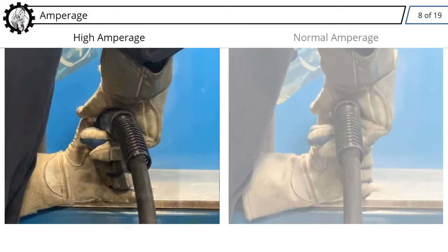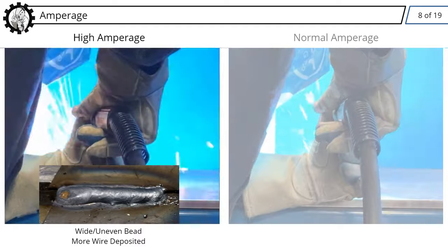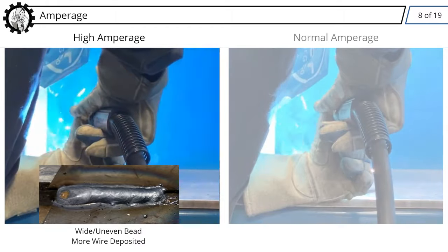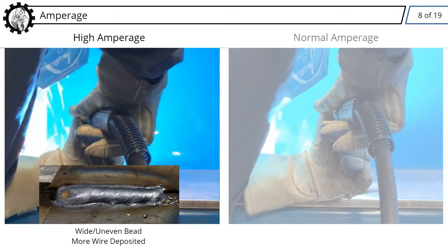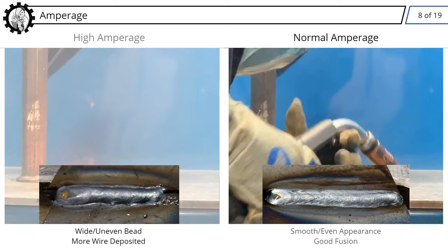In this example, you see a weld being made with a disproportionately high amperage, as well as a wide, uneven bead. This also results in a higher amount of weld wire being deposited. On the other hand, amperage that is appropriately matched for the voltage being used creates a smooth weld bead with even appearance and good fusion.